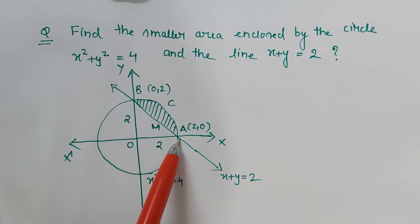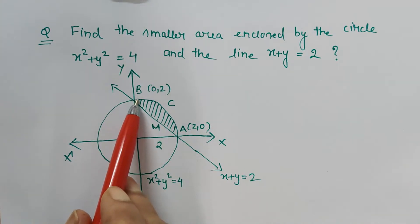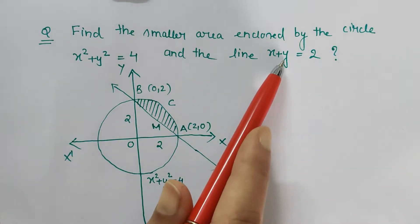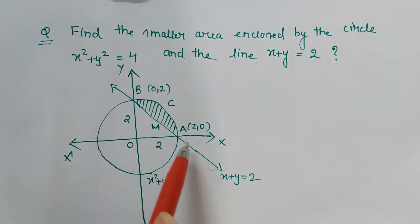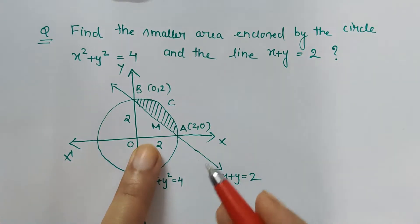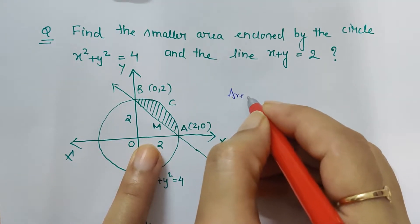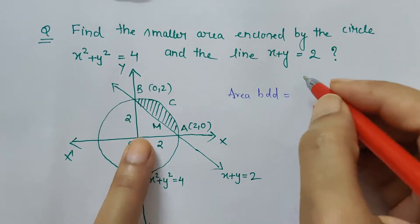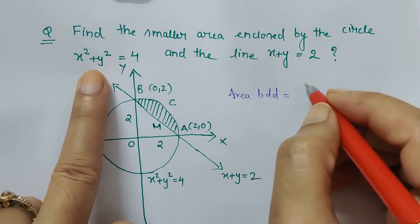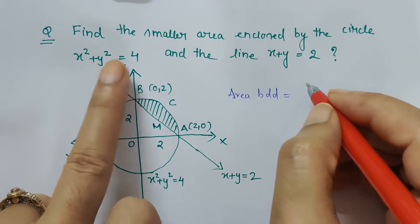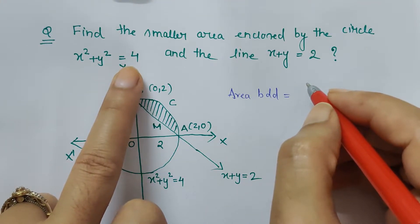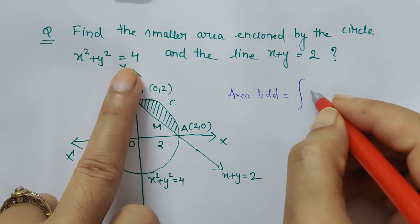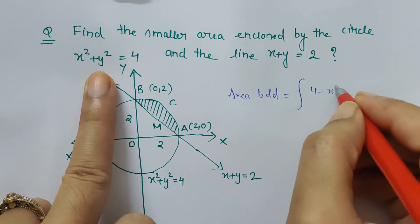The equation of the circle will be substituted, and y in the form of x from the line will be substituted for getting the area. The bounded area will be calculated using this approach. From the equation of the circle, how can y be written in the form of x? y equals √(4 - x²). So this will be √(4 - x²) dx.